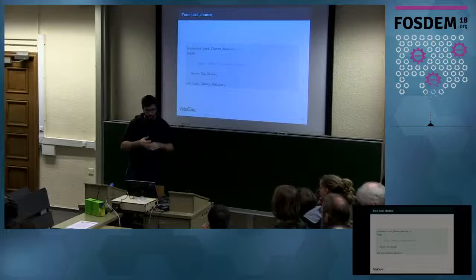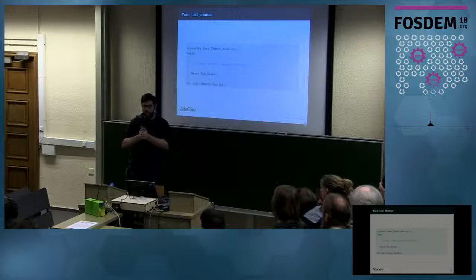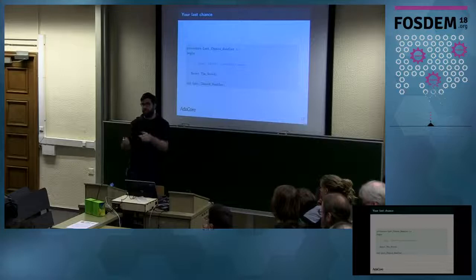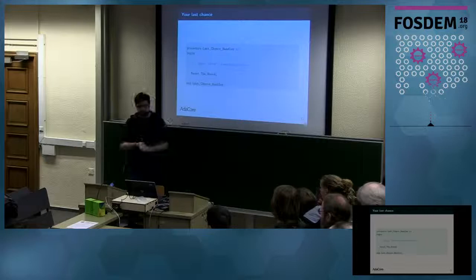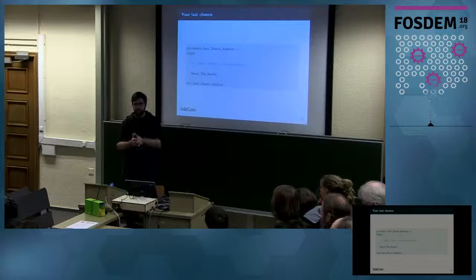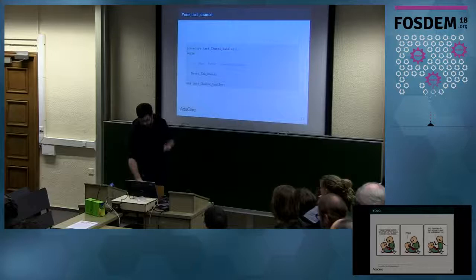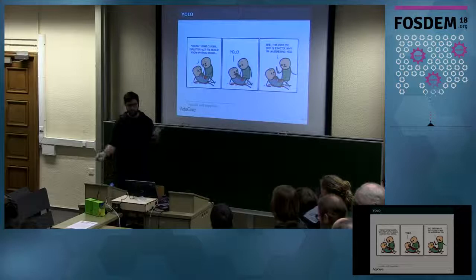Those constraints you put on the type and the checks that come with them have some performance impact, because there will be more code added to your binary — some comparisons and stuff like that. It's very useful when you are in development and debugging because you want to catch bugs as early as possible. But once you are in production, maybe you want all the performance and you can remove everything. It's up to you if you really want to dare running your application without any checks.